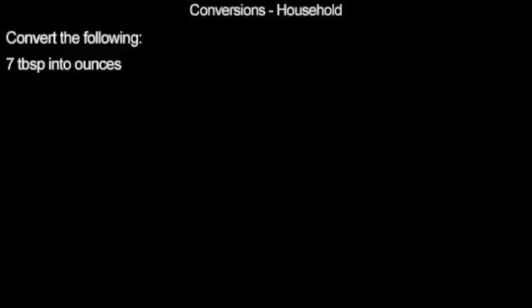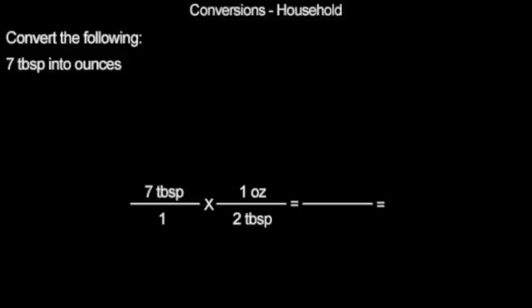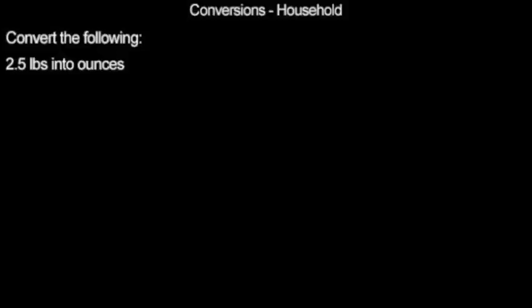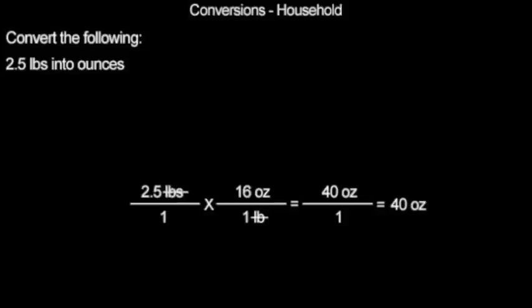For our first example here, we will be converting 7 tablespoons into ounces. We start with our 7 tablespoons. We can convert directly into ounces because 1 ounce equals 2 tablespoons. Cancel tablespoons and multiply across. We are left with 7 ounces over 2. Divide and we are left with 3.5 ounces, which is equal to our original 7 tablespoons. Pause the video, try this problem on your own, and continue when you are ready for the answer. 2.5 pounds is equal to 40 ounces.